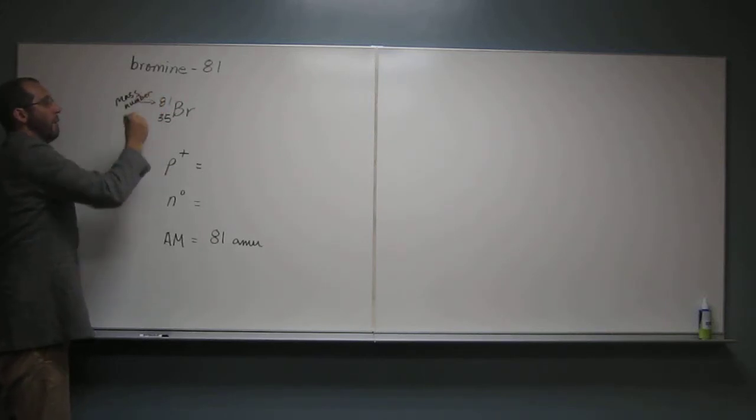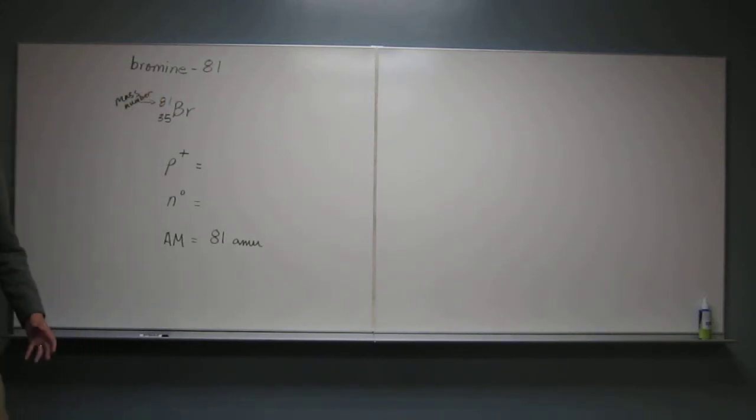What is the mass number mean? What is that a combination of? A combination of protons and neutrons. Protons plus neutrons, right.